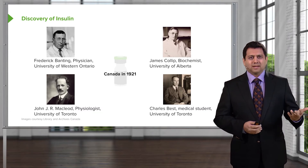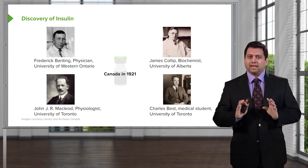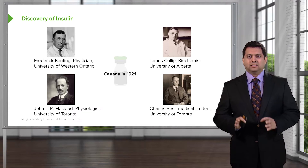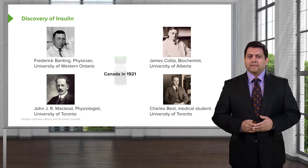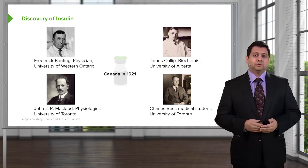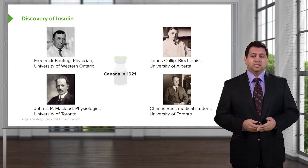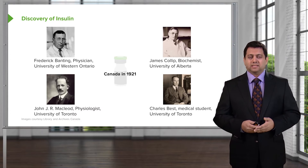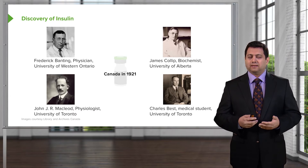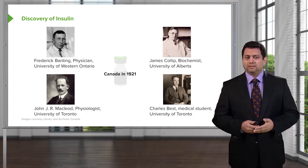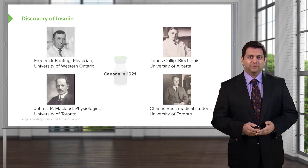Prior to 1921, everybody who had diabetes died. These discoveries would not have happened without James Kolob, who is the biochemist who actually helped them synthesize and isolate this important chemical, this important hormone.